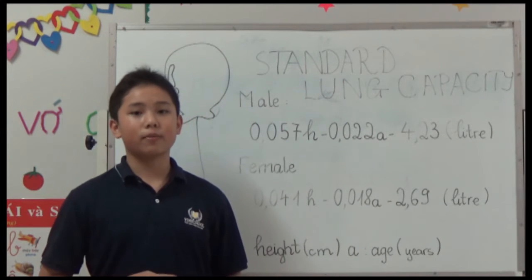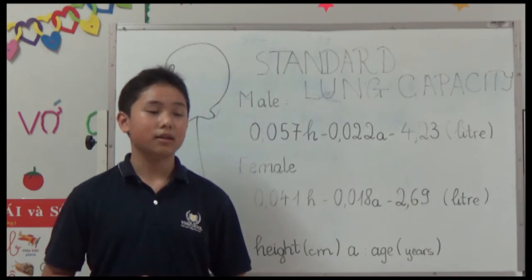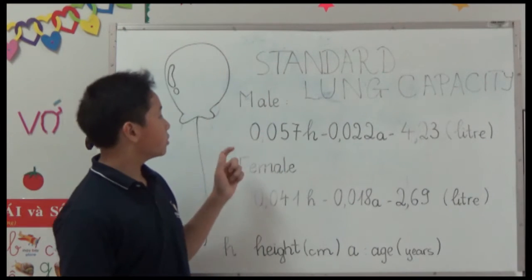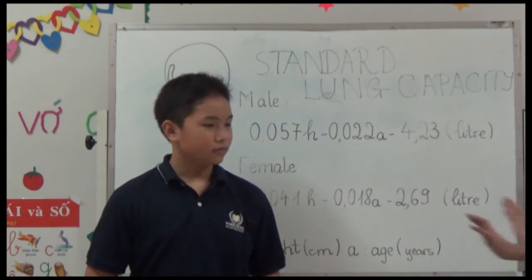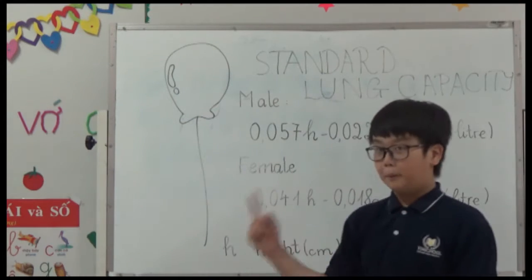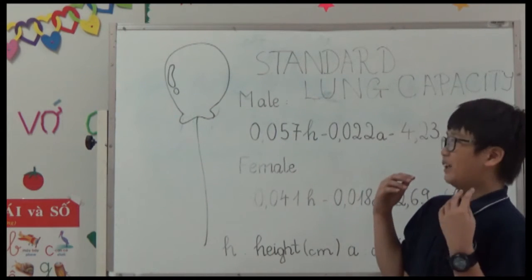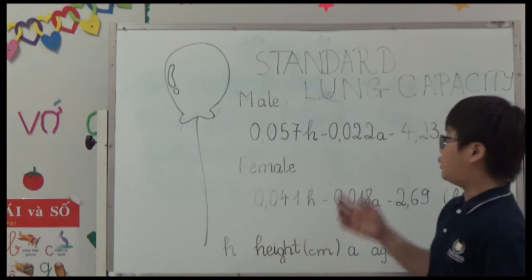It is the maximum amount of air that lungs can take in. To calculate lung capacity, we use these two formulas—one for male and one for female, as you see. He is male, so we can use this formula.